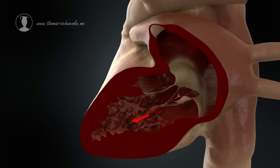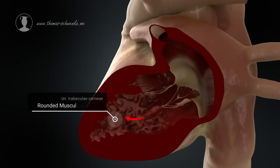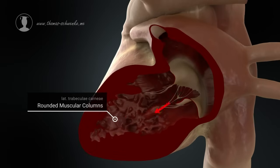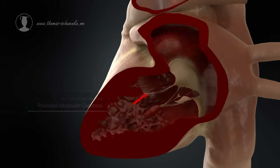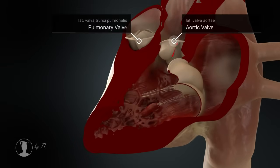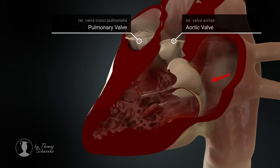In the left ventricle, the muscle columns known as trabeculae carneae are particularly well developed. The resulting pressure opens the aortic valve and the blood is pumped through the entire body with the help of the aorta.